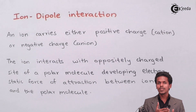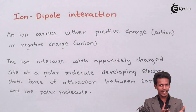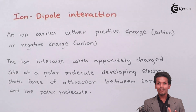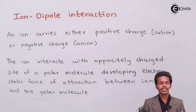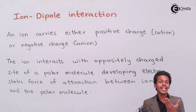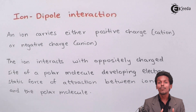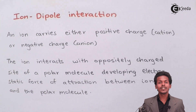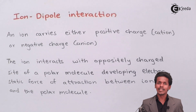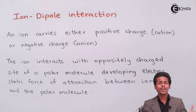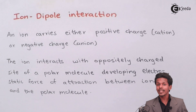An ion can be both positive and negative — that is, a cation or an anion. For example, in NaCl (sodium chloride), sodium has a partially positive charge and chlorine has a partially negative charge.